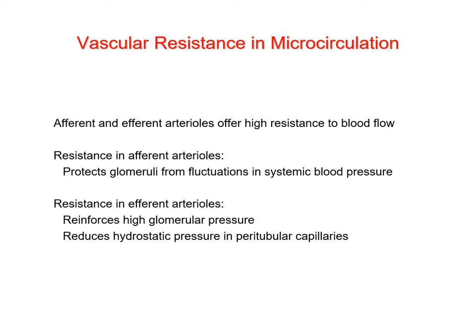Alterations in vascular resistance are mediated by changes in the diameter of arterioles, affecting blood pressure. If the incoming blood vessel dilates, there's increased flow into the glomerulus; if the outgoing vessel constricts, there's higher pressure inside; if it dilates, pressure is lower. Changes in resistance in the afferent arterioles help protect the glomerulus from fluctuations in systemic blood pressure.